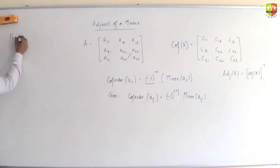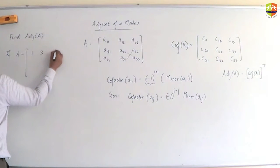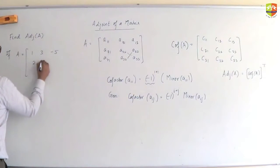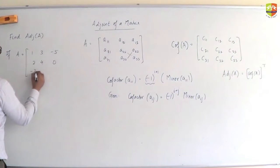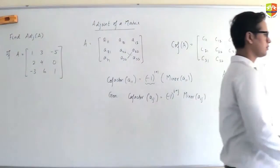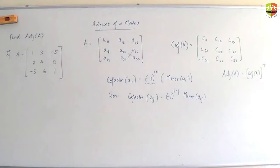Now I will give you a question. Find the adjoint of A if your A is: 1, 3, -5, 2, 4, 0, -3, 6, 1.